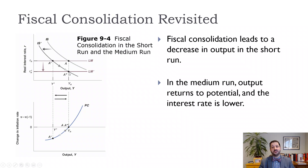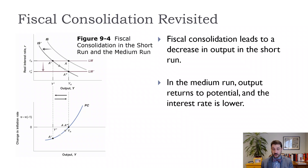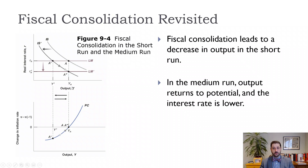Even if monetary policy doesn't intervene, we think eventually — whether that's three, five, or ten years — we will get back to the natural level of output. We think that because the natural level of output depends on real factors: the number of workers, the amount of capital, and the technology we have. A potential flaw in the model is that when investment is lower for a long time, as in the Great Depression, we're not investing in new capital or new technology, and that can lengthen the time it takes to return to the natural level of output.